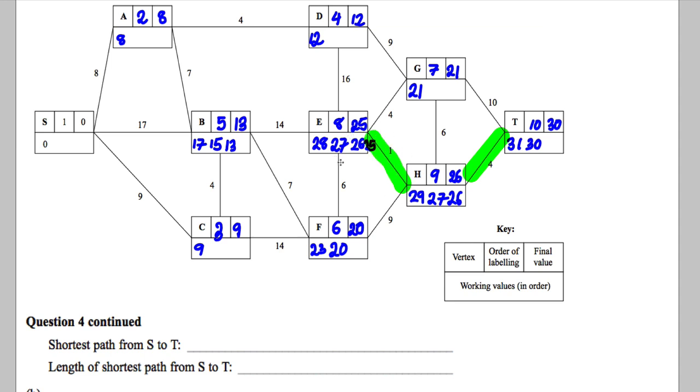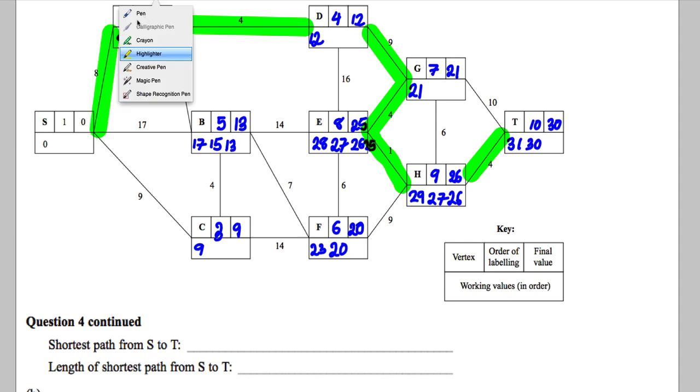26 back 1 gives me 25. 25 back 4 gives me 21. So it must be back here. 21 back 9 gives me 12. 12 back 4 gives me 8. And 8 back 8 gives me the 0. So that's how I know which is my path.